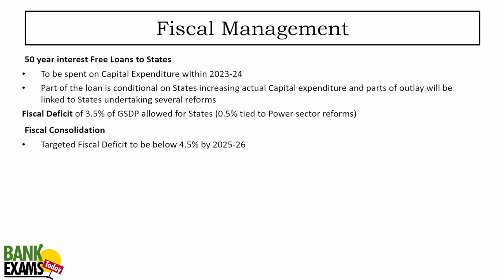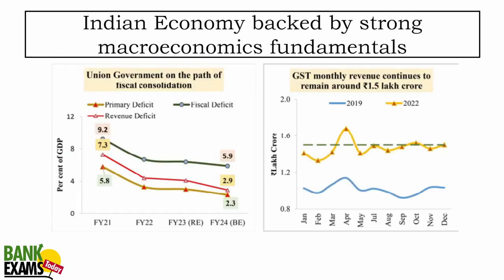For fiscal management, 50-year interest-free loans to states continue, and the fiscal deficit of states is 3.5% of gross state domestic product, with 0.5% tied to power sector reform. The fiscal deficit target for the central government is 4.5% by 2025-26, though right now the fiscal deficit is at 5.9%. GST monthly revenue continues to be around 1.5 lakh crore — it rose to more than 1.6 lakh crore in April but has stabilized at around 1.5 lakh crore.